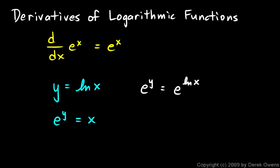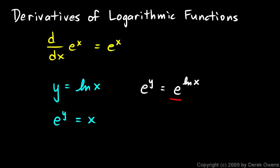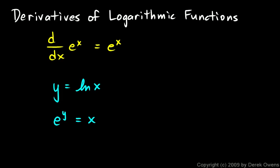I've exponentiated each side with base e. On the right side, e to the ln of x — the base e exponent and the base e logarithm cancel each other out — so I just get x. Now I can differentiate this using implicit differentiation.